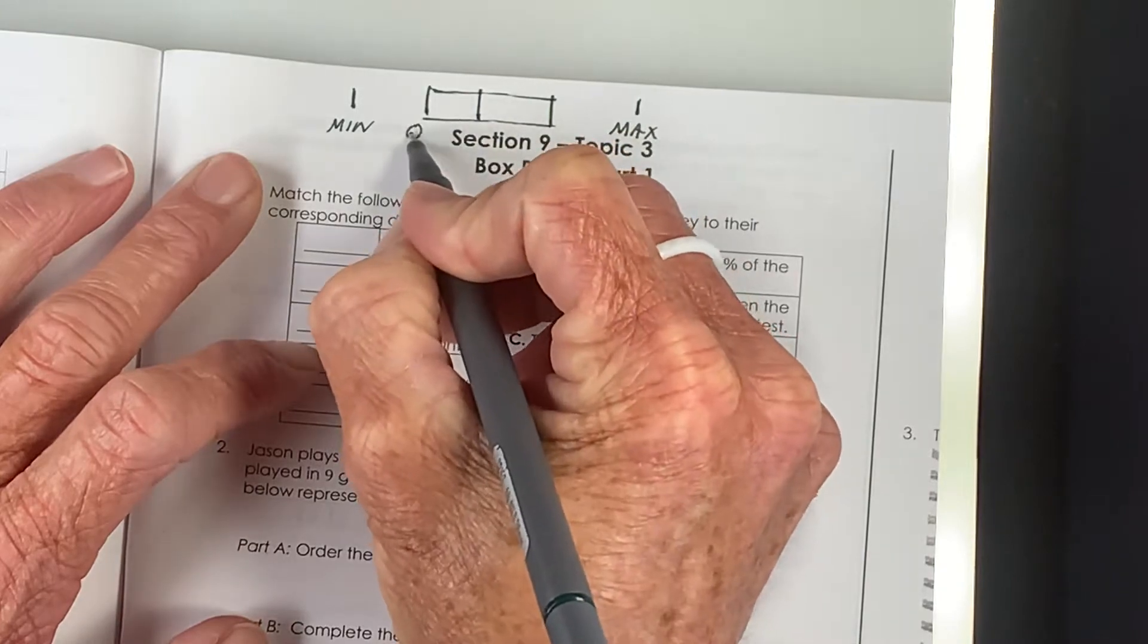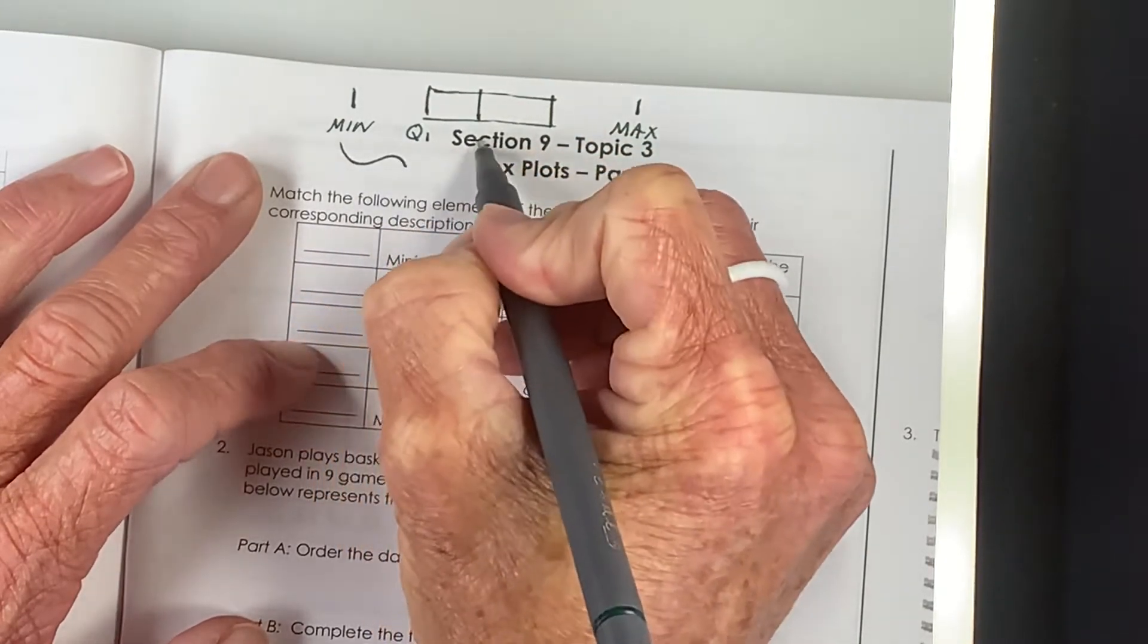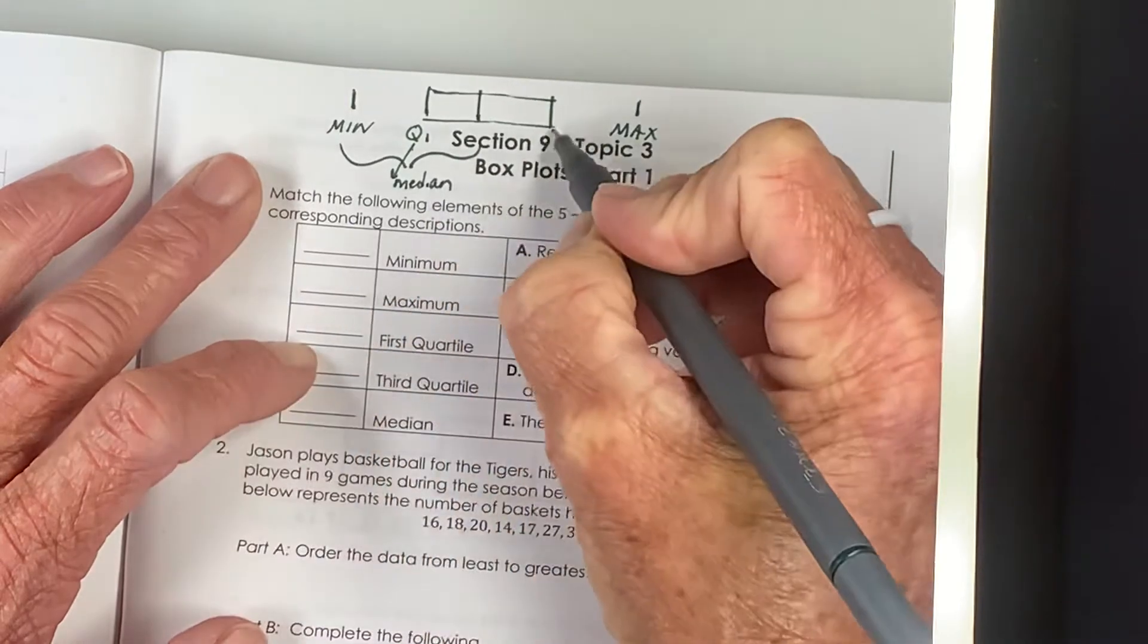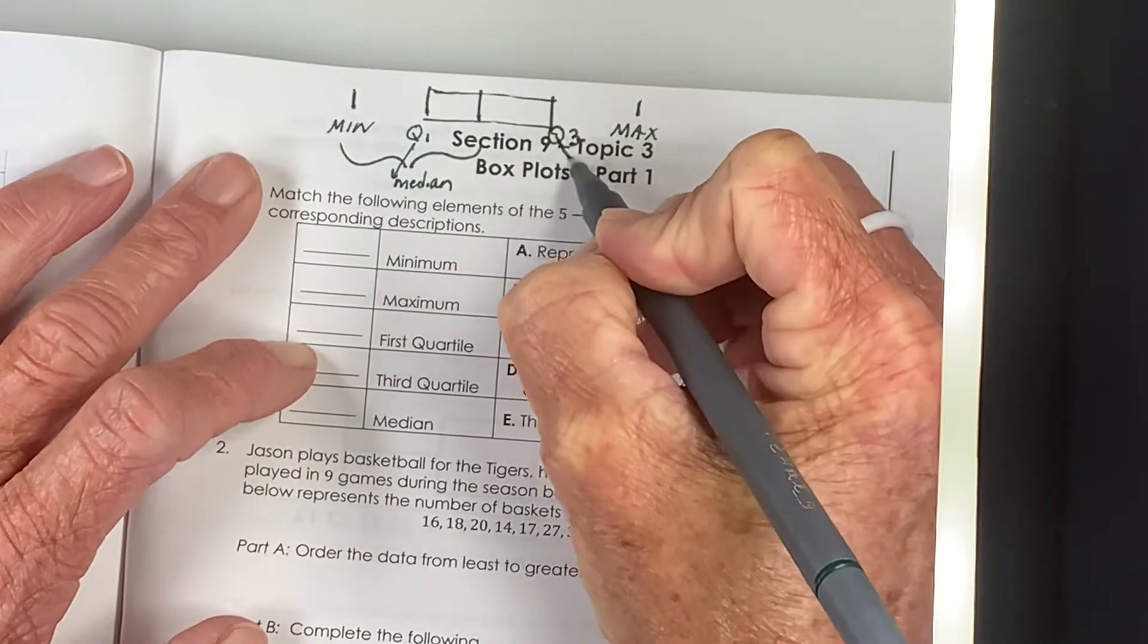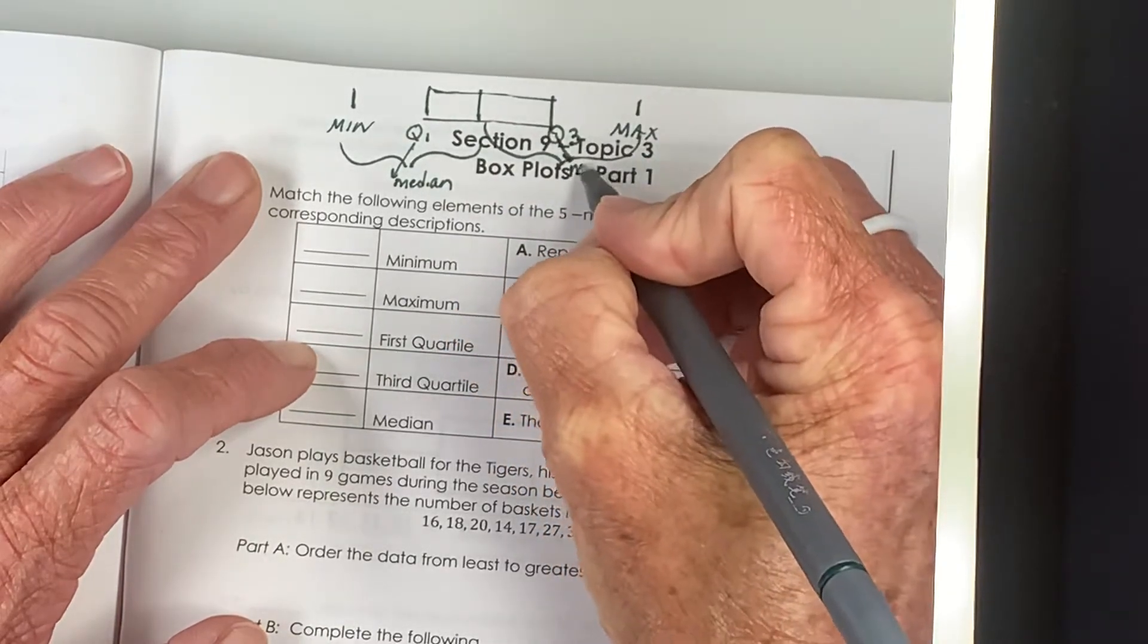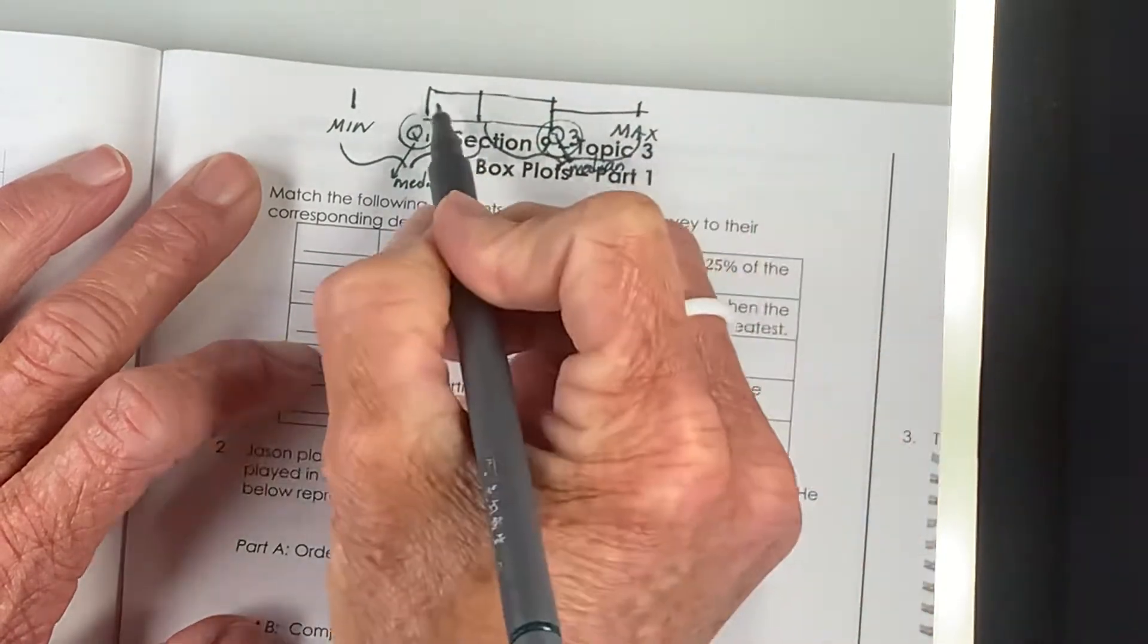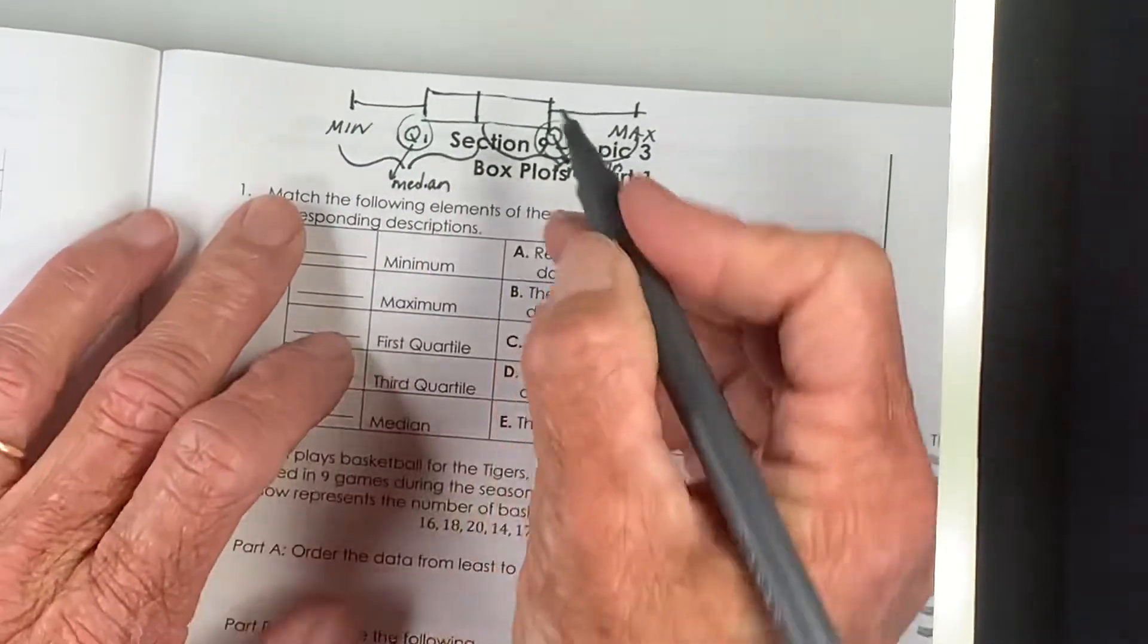This is quartile one and it is the middle of the lower 50% of the data. It's the median of the lower half. This is quartile three and it is the median of the upper half of data. Quartile one and quartile three are both medians. We connect them. They're also called box and whiskers plots because these look like little whiskers.